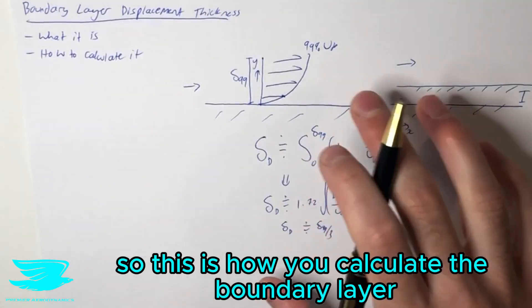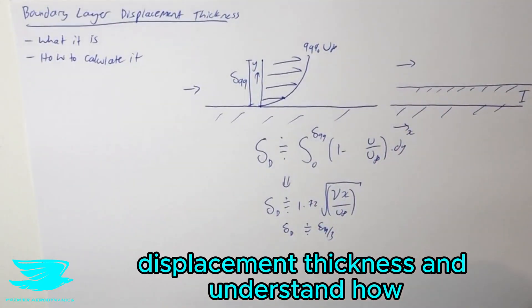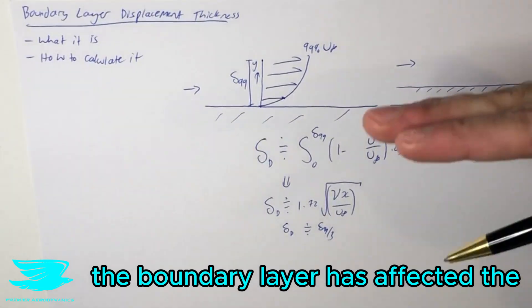So this is how you calculate the boundary layer displacement thickness and understand how the boundary layer has affected the flow having to move up.